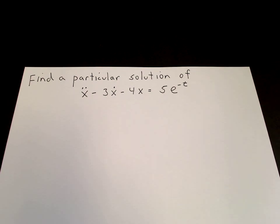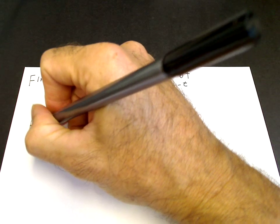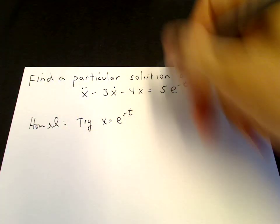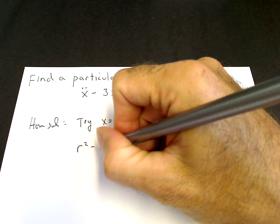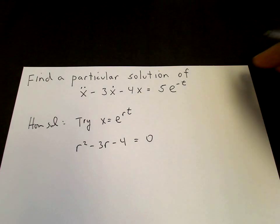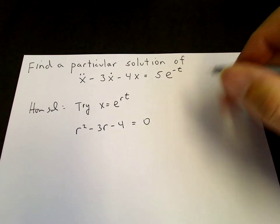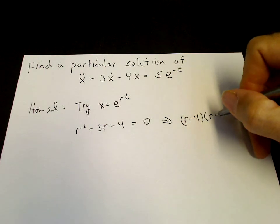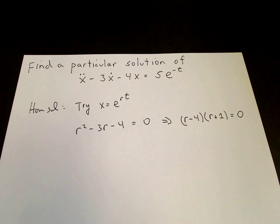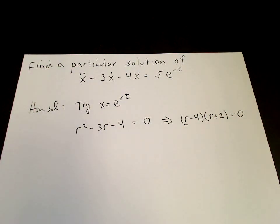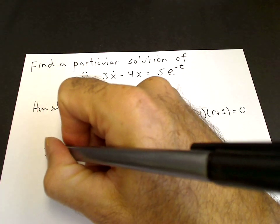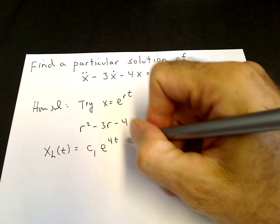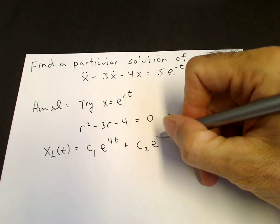We find the homogeneous solution first. We try x equals e to the rt to get the characteristic equation, giving r squared minus 3r minus 4 equals 0, after canceling e to the rt. We can factor this as r minus 4 times r plus 1 equals 0, so the two roots are 4 and minus 1. The homogeneous solution is c1 times e to the 4t plus c2 times e to the minus t.